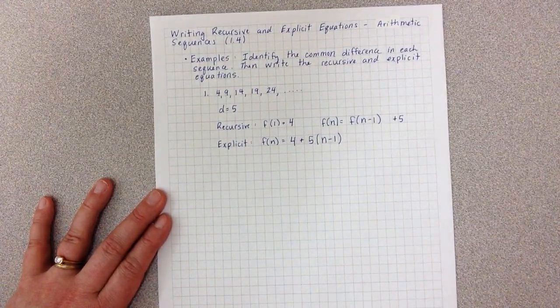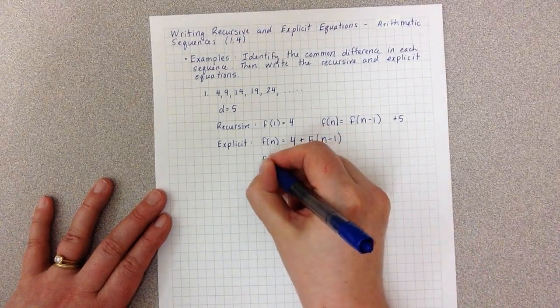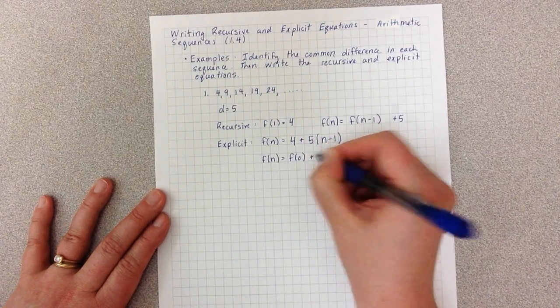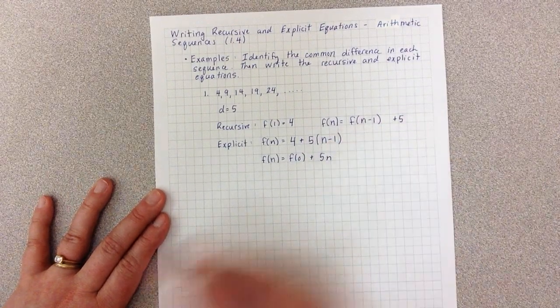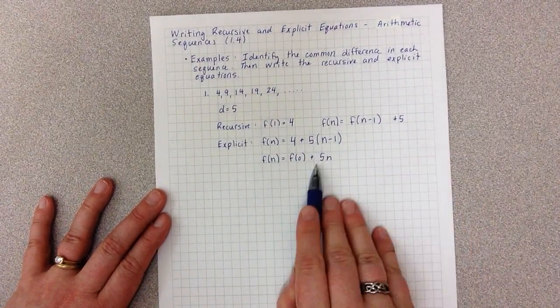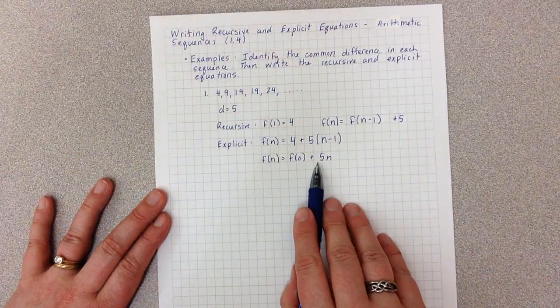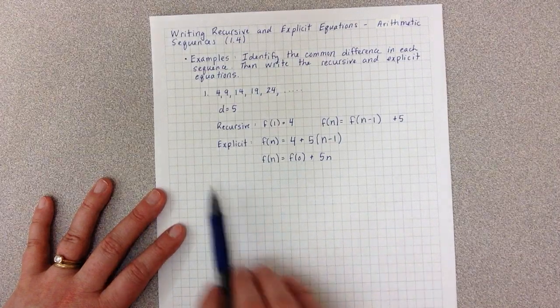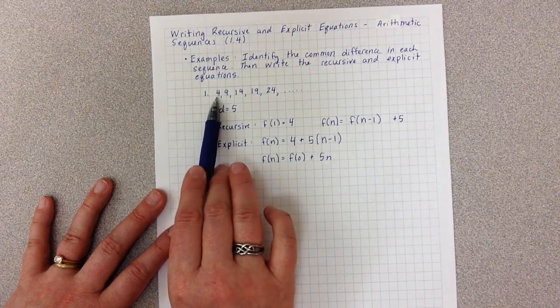The other way is to remember that we could write this as F(0) plus 5 times N, because I'm adding five each time. Adding five over and over again is multiplying. But I need the F(0) term. So here I have the F(1) term.